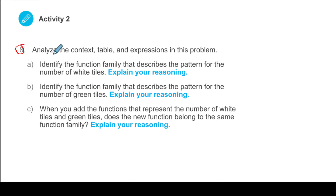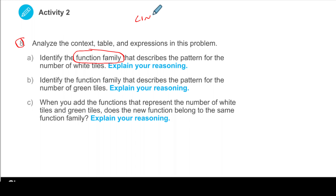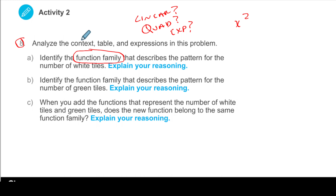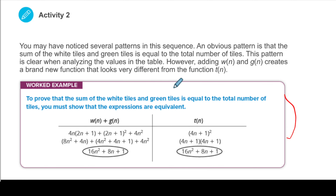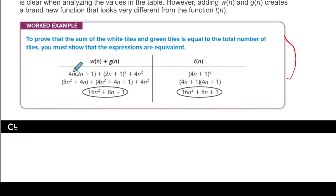Number 8: analyze the context, table, and expressions. Identify the function family. We're dealing with three basic families: linear, quadratic, and exponential. Was our expression linear? Was it quadratic? Was it exponential? Actually, it was quadratic, because x was squared. Whenever you have an x squared, that's quadratic. That explains our reasoning. The family function that describes the pattern for the number of green tiles is also quadratic. When you add two quadratic functions together, you still get a quadratic — so yes, adding functions from the same family gives you the same family.